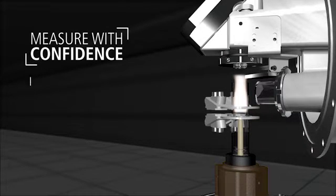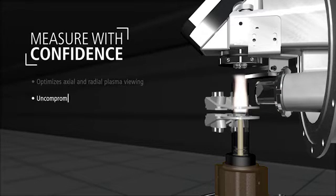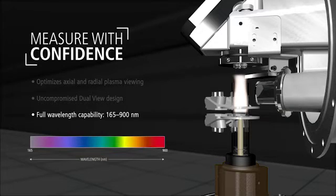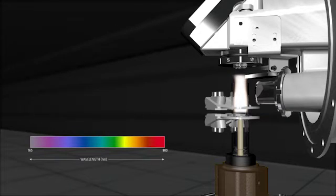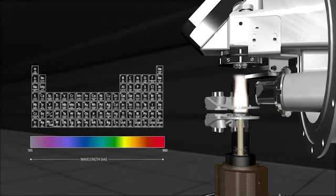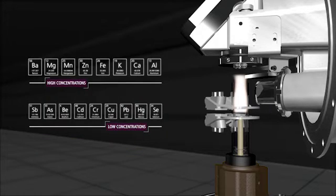Unlike synchronous vertical dual-view ICP systems, the Avio 200's patented dual-view design measures every wavelength with no loss of light or sensitivity. Elements at high, greater than 500 nanometer, or low, less than 200 nanometer wavelengths can be measured with complete confidence, regardless of their concentration.